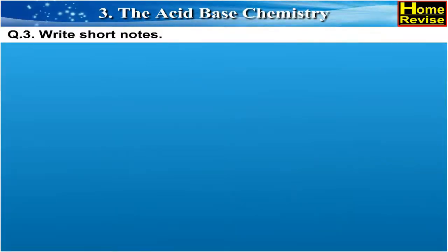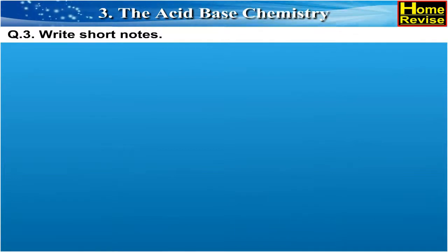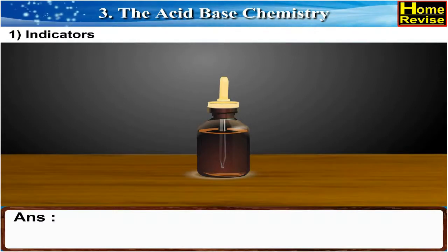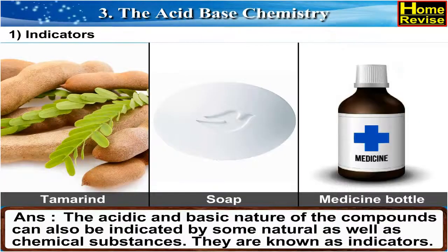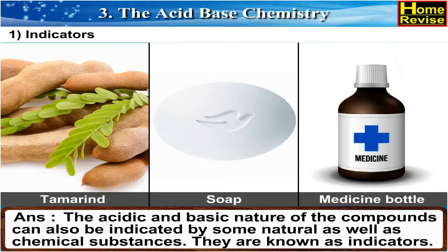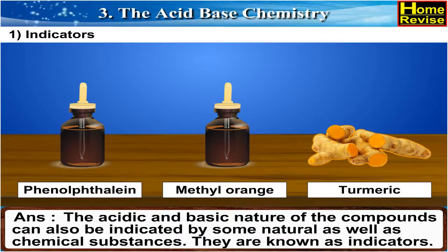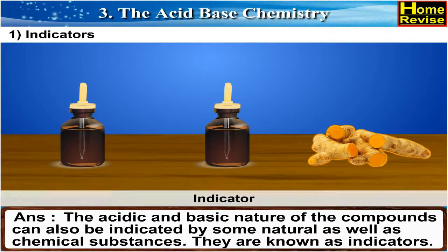Write short notes with proper examples on: First, indicators. The acidic and basic nature of compounds can also be indicated by some natural as well as chemical substances. They are known as indicators.